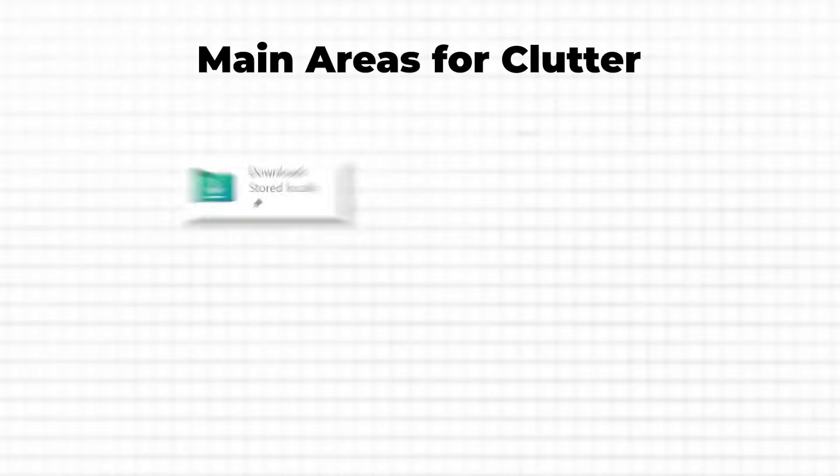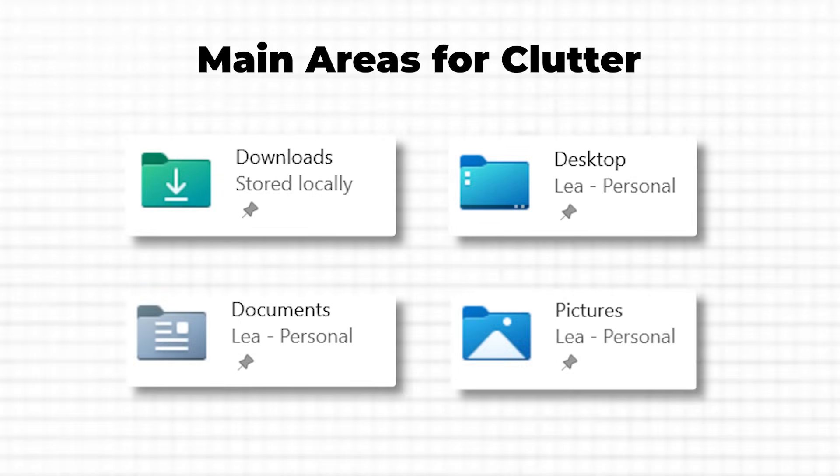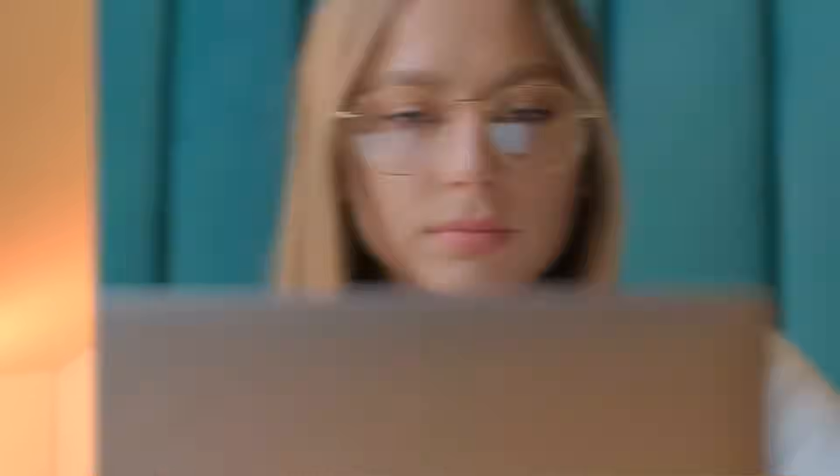Start by defining the main areas where clutter tends to build up. These are usually your downloads folder, desktop, documents, and pictures. But don't stop there — also look at any other spaces where you store information, such as shared drives or cloud storage.